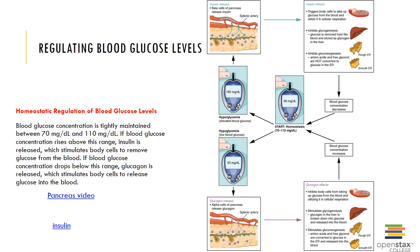Insulin and glucagon work as antagonists to maintain homeostasis of blood sugar. Insulin lowers blood glucose levels by enhancing membrane transport of glucose into body cells, converting excess glucose to glycogen for short-term storage (glycogenesis), and into fat for long-term storage in adipocytes (lipogenesis). Glucagon raises blood glucose levels by breaking down glycogen into glucose (glycogenolysis), synthesizing glucose from lactic acid and other non-carbohydrate molecules (gluconeogenesis), and releasing glucose to the blood by liver cells.